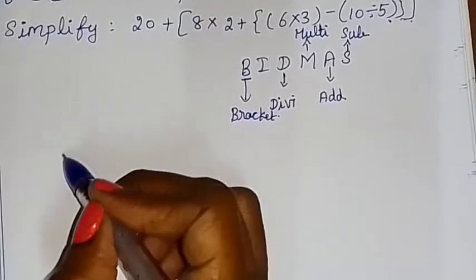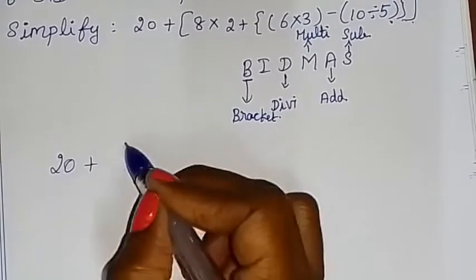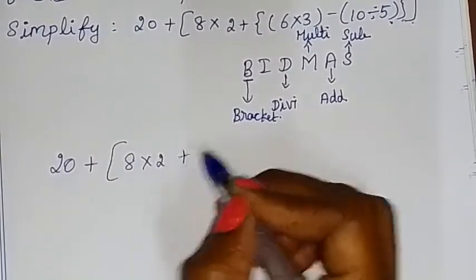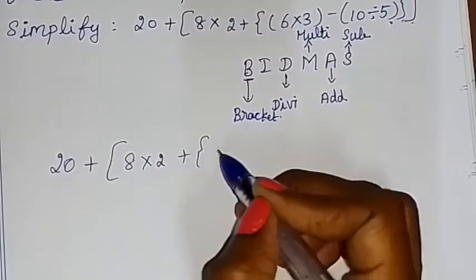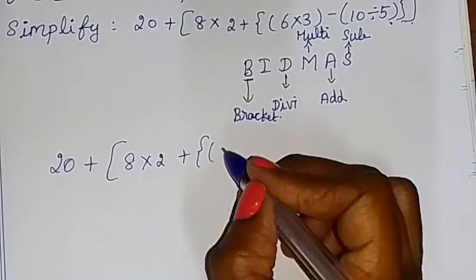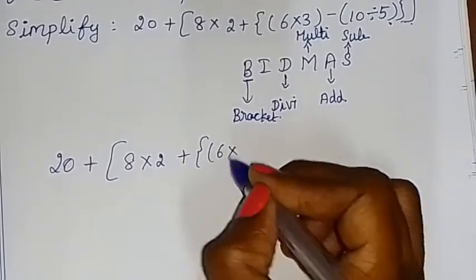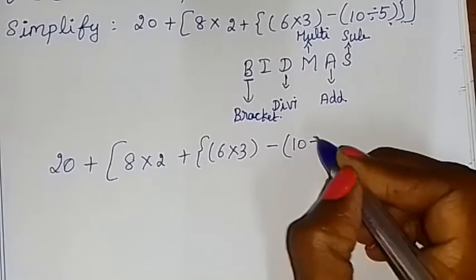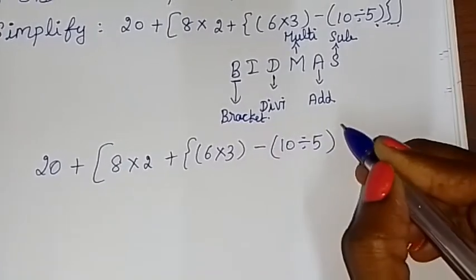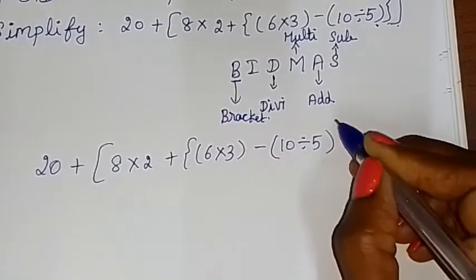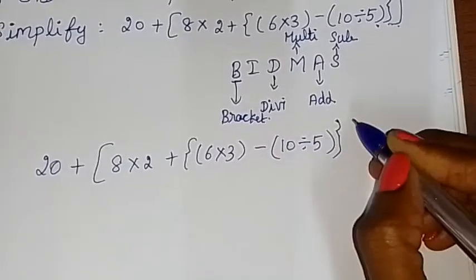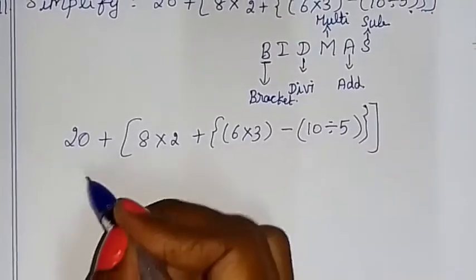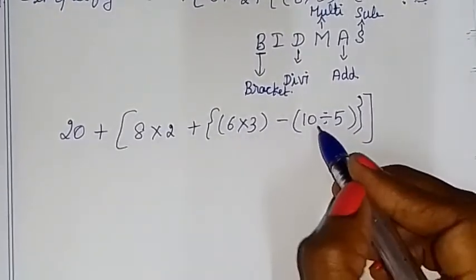The expression is: 20 plus 8 into 2 plus, curly bracket open, round bracket open, 6 into 3 minus 10 divided by 5, round bracket closed, curly bracket closed, square bracket closed. Now we solve this from the inside.